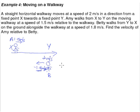And this is what we have been told so far. Now find the velocity of Amy relative to Betty. So according to what we have talked about so far, the velocity of Amy relative to Betty simply means it's the velocity of Amy minus the velocity of Betty.